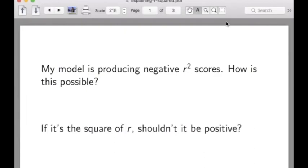Here's a really nice question that people have asked. The model is producing negative R-squared scores. How is this possible? If it's the square of R, shouldn't it be positive or at least not negative?